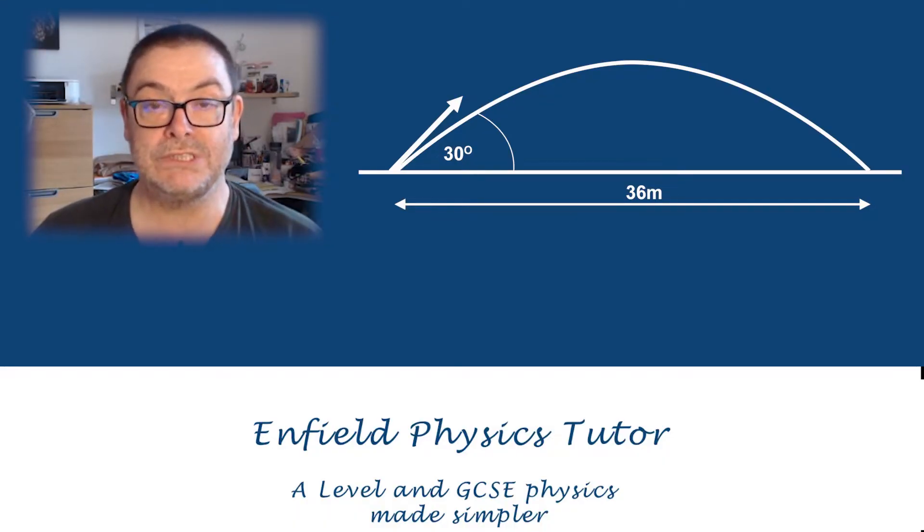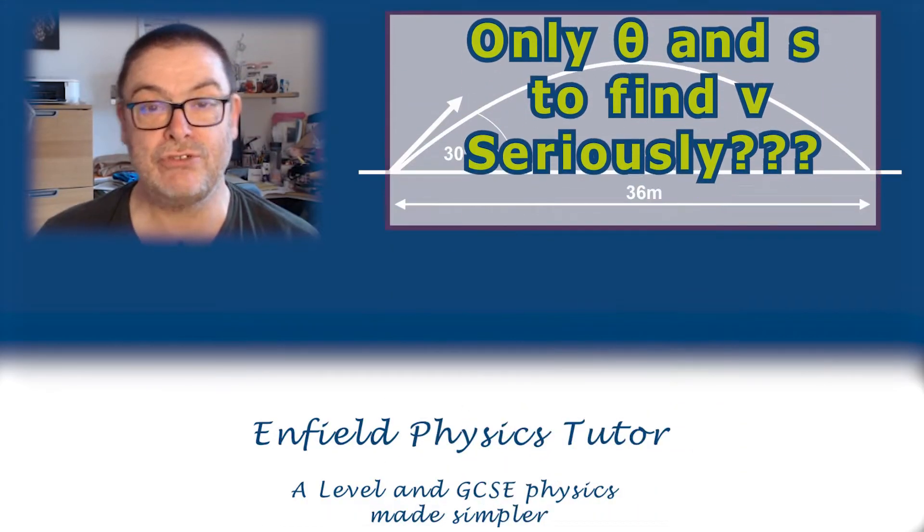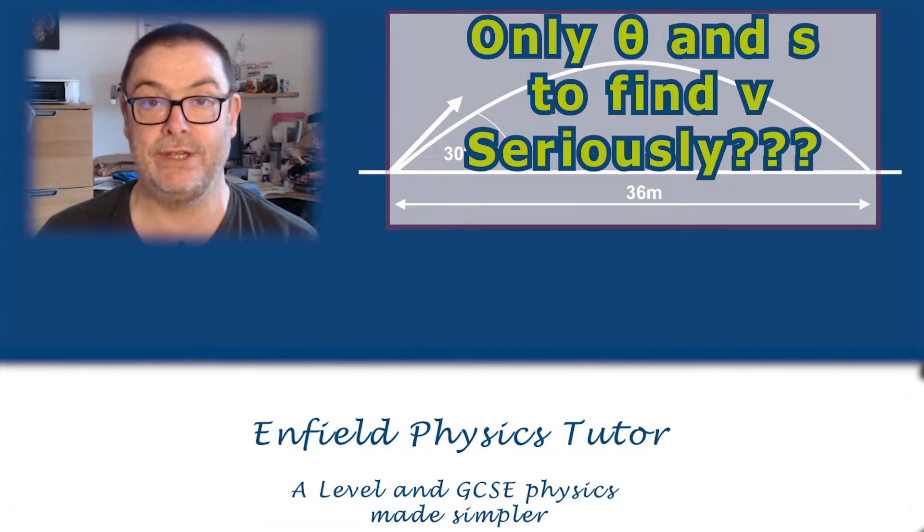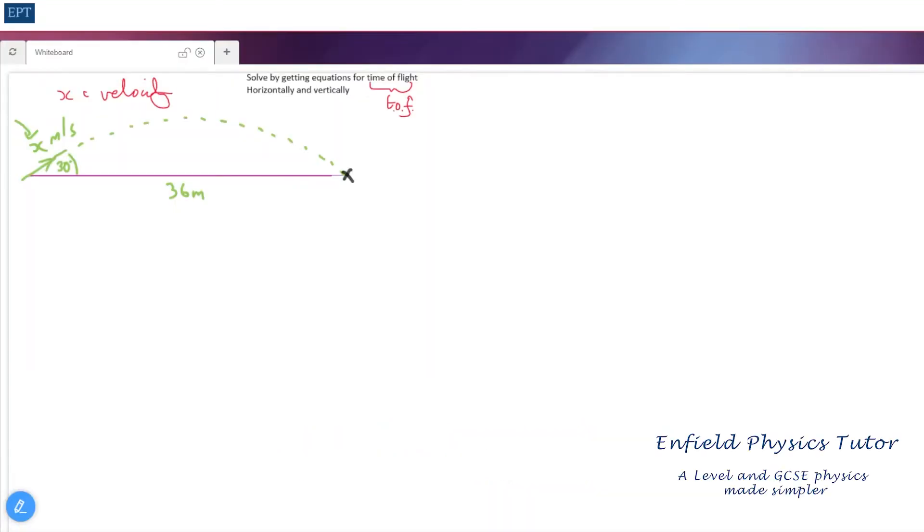Hello and welcome along once again to Enfield Physics Tutor tries to make difficult physics easy. This question where you have an object that's being thrown at an angle of 30 degrees to the horizontal and has an initial velocity which I've called x - we're not told what that value is.